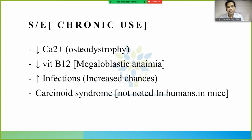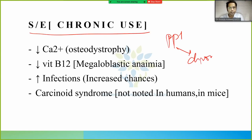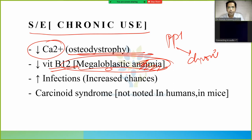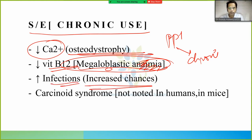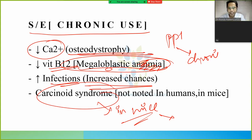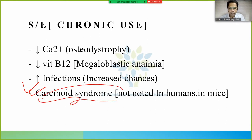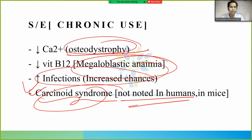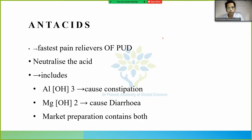Side effects of proton pump inhibitors when used chronically: they cause decreased calcium levels leading to osteodystrophy, and decreased vitamin B12 leading to megaloblastic anemia. Patients continuously taking PPIs are more susceptible to infections. In mice, carcinoid syndrome has been noted, but this has not been observed in human beings.